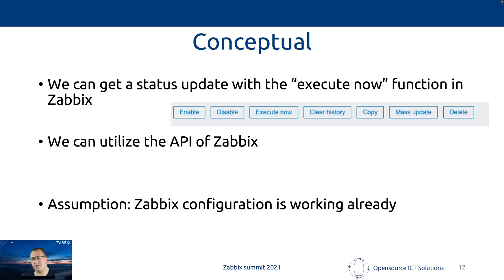Of course, when a trap is sent you don't want to manually go to the Zebix frontend, find the configuration, find the correct items, and hit Execute Now — you want this automated. That's possible using the Zebix API. In the API there is a method called task.create, and with that method we select specific items and tell Zebix to do an Execute Now. The assumption is that your Zebix configuration is already working — SNMP traps coming in, polling working — and then we can utilize the API.